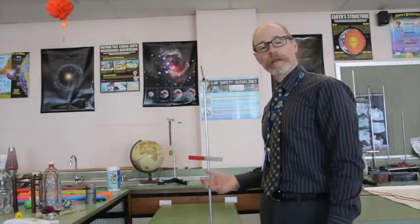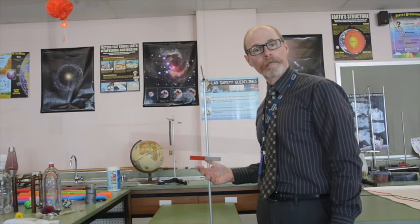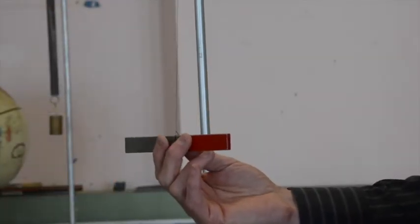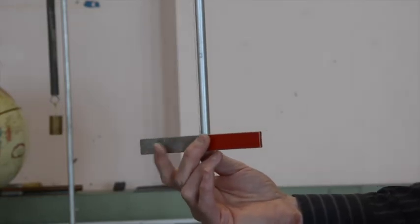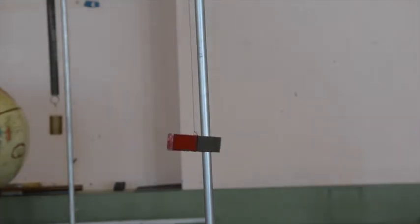The poles of a magnet are designated north and south based on the preferred orientation in the Earth's magnetic field. If we randomly displace the orientation of the magnet and release it, the magnet will receive a torque from the Earth's magnetic field.